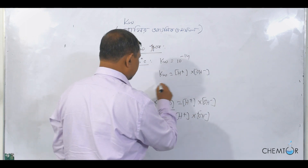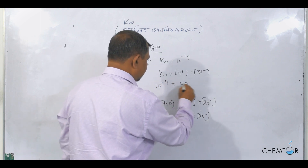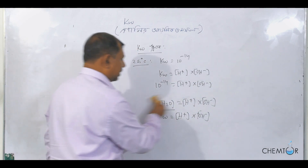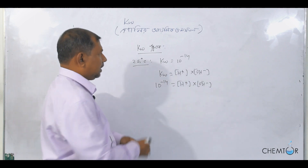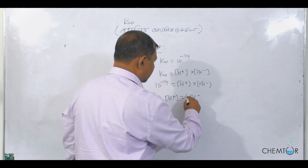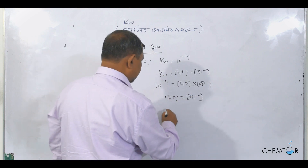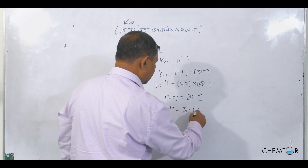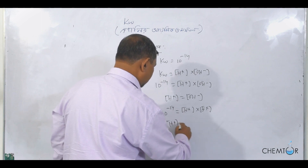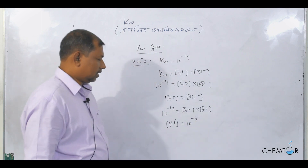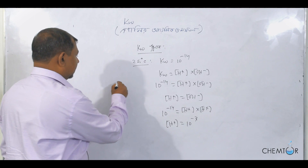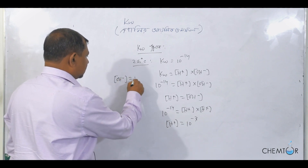So here we have 10 to the power minus 14, which is equal to hydrogen ion times hydroxyl ion. When water is neutral, hydrogen ion equals hydroxyl ion. So, 10 to the power minus 14 equals hydrogen ion times hydroxyl ion, and hydrogen ion is equal to 10 to the power minus 7. Hydroxyl ion is also equal to 10 to the power minus 7.